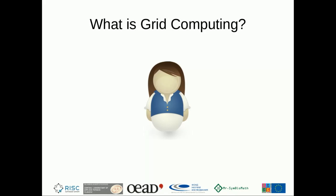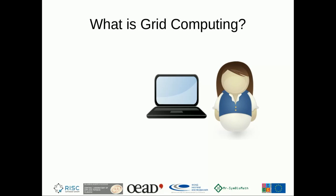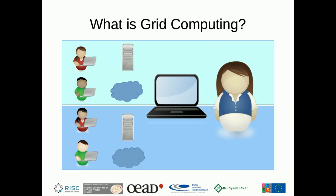This is Alice. Alice is a researcher and relies heavily on her computer for her research. She is working together with researchers all over the world on different research projects, using computers located at the research organizations. In grid computing, these collaboration groups are called virtual organizations, and they comprise people and computing resources.